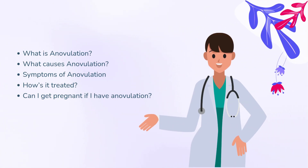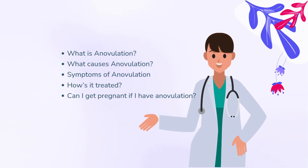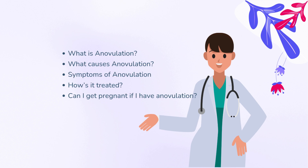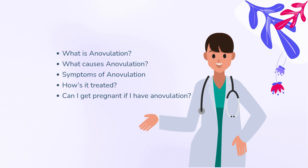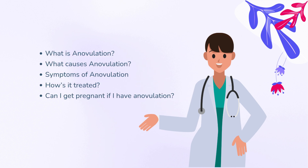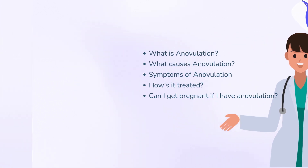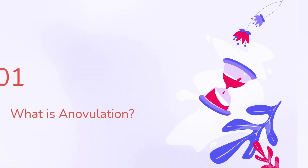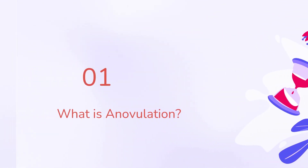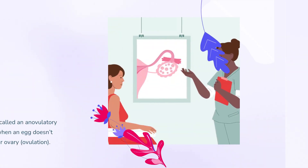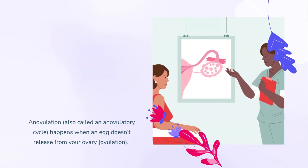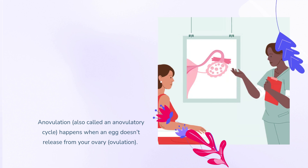What is anovulation? What causes anovulation? Symptoms of anovulation. How is it treated? Can I get pregnant if I have anovulation? Anovulation, also called an anovulatory cycle, happens when an egg doesn't release from your ovary during ovulation.